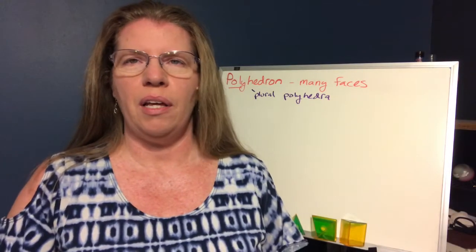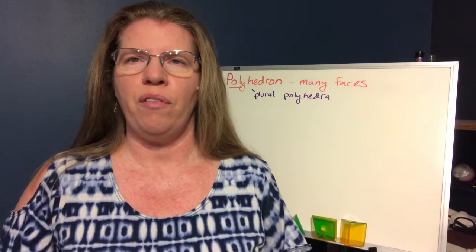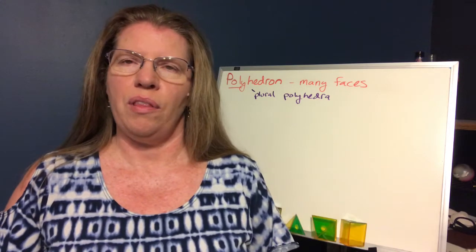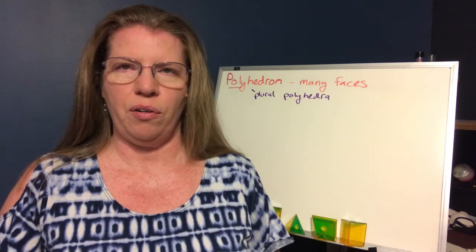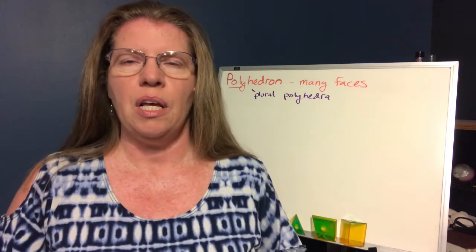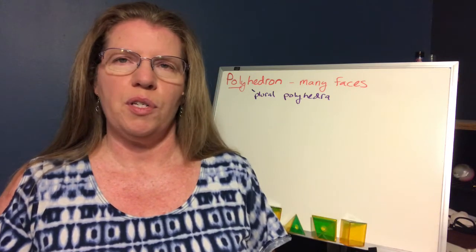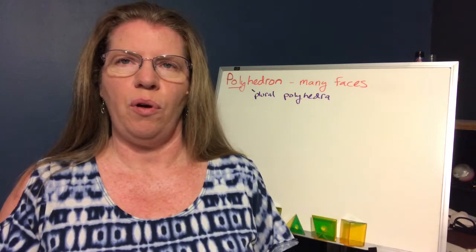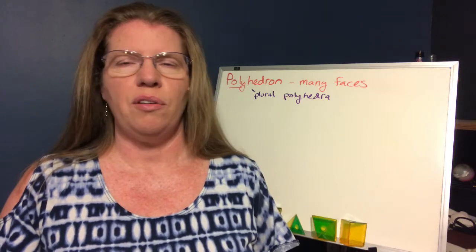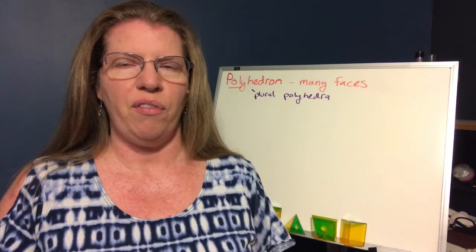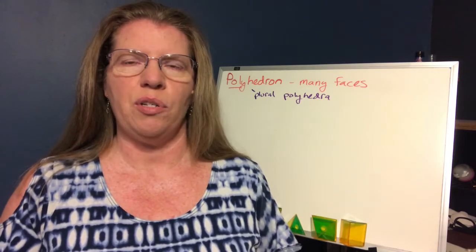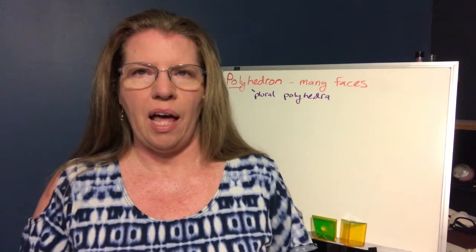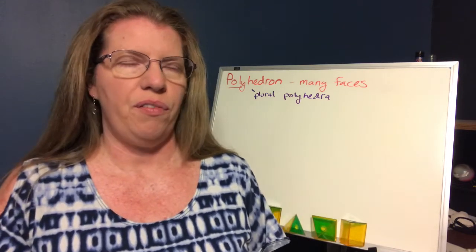Hello everyone, we are beginning chapter 12, our final chapter of the year. Chapter 12 deals with solid figures or three-dimensional figures. We have different specific types of figures we want to go over. Eventually we're going to get into volume and surface area, but first today we just want to talk about the different kinds of solid figures that we have and are going to study.